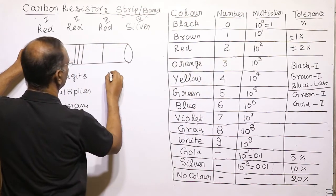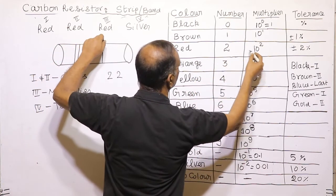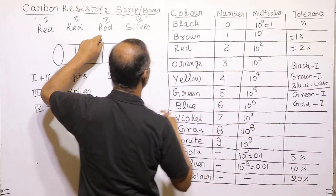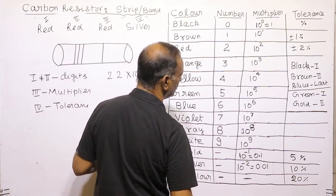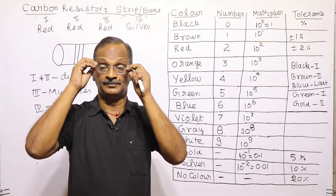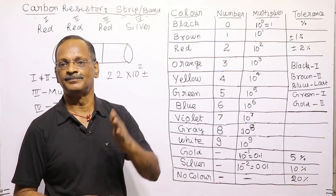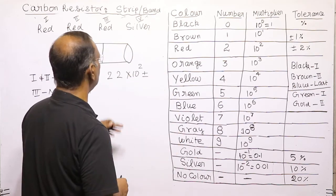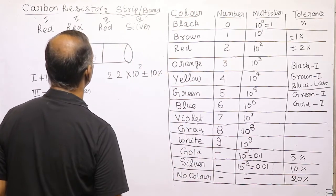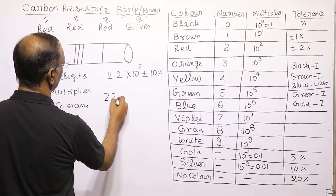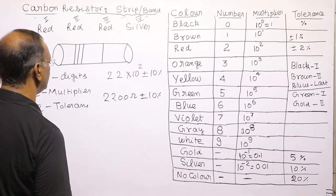For red-red-red-silver: first digit is 2 (red), second digit is 2 (red), third band is the multiplier — red means 10 to the power 2. Remember gold means 5 percent and silver means 10 percent. So silver tolerance is 10 percent. The resistance is 2200 ohm plus or minus 10 percent.